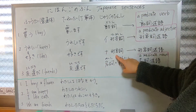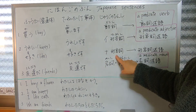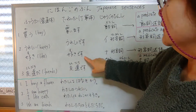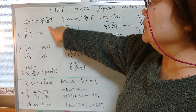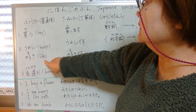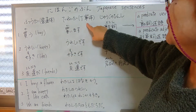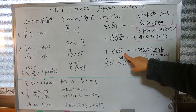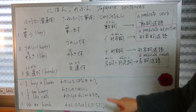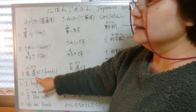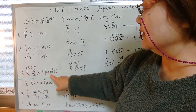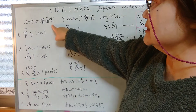Suki — na keiyoshi, na-adjective. The normal form is suki, and the polite form is suki desu. This is na keiyoshi — na-adjective. And number three: tomodachi da — friends. The normal form is tomodachi da.